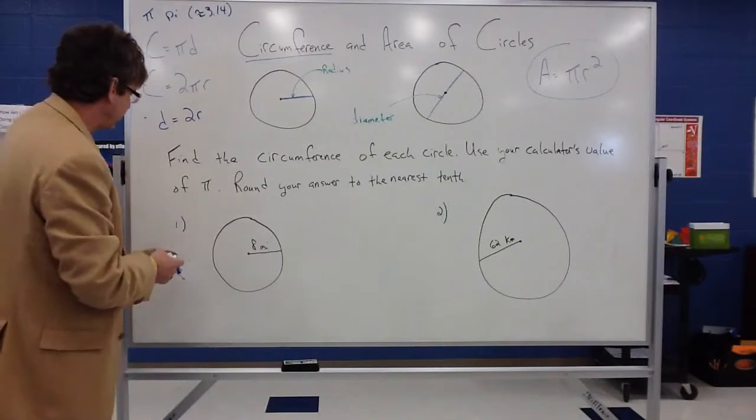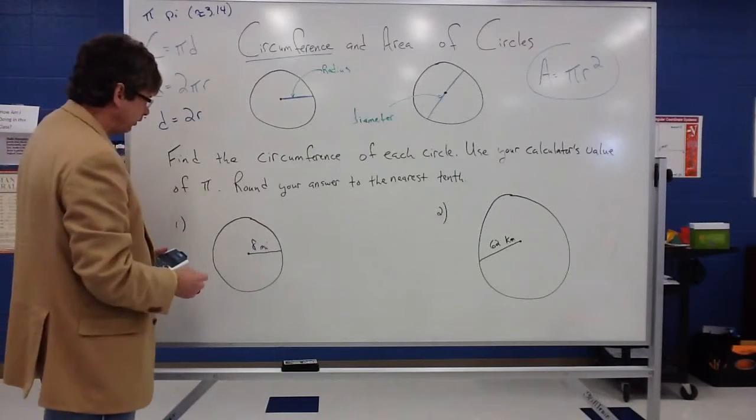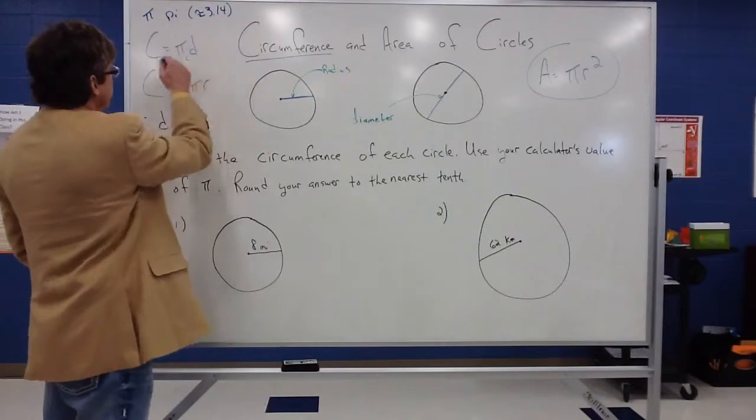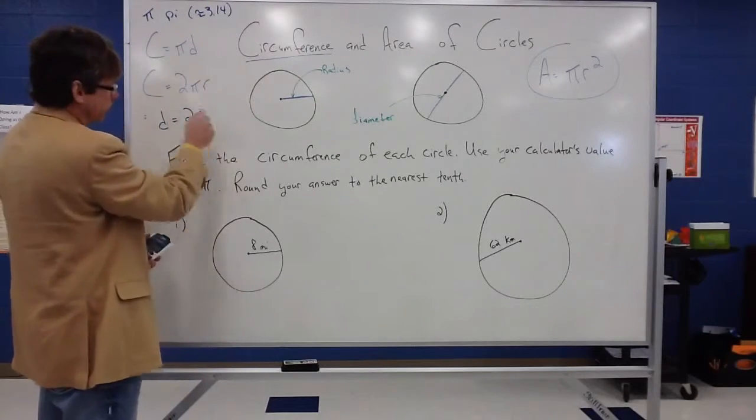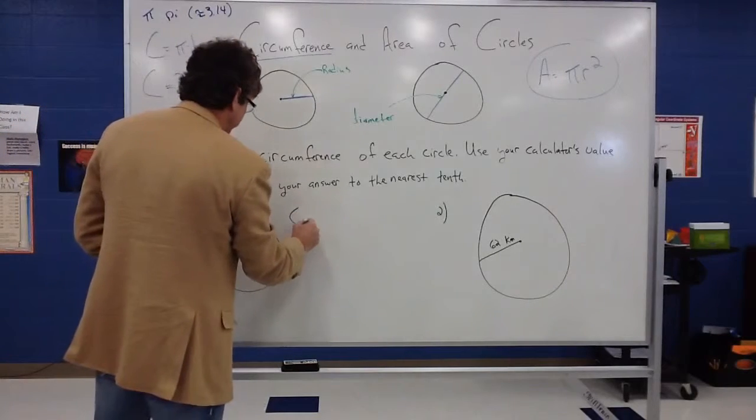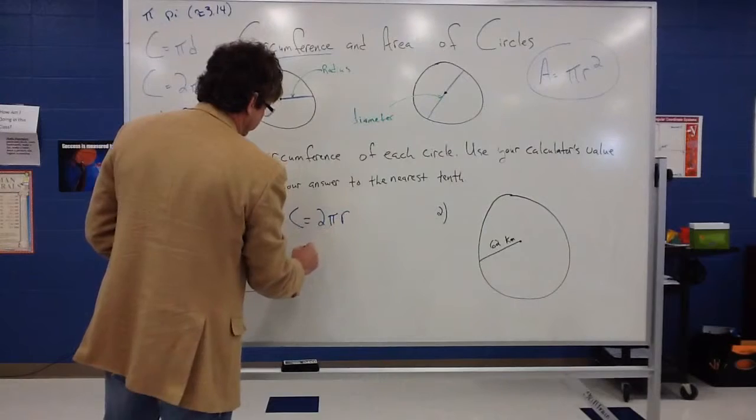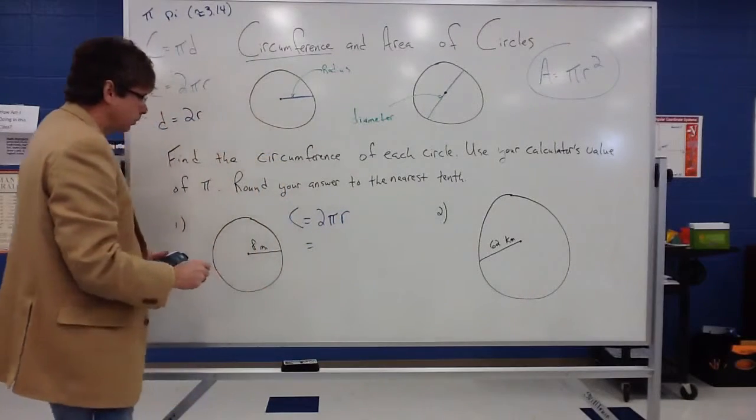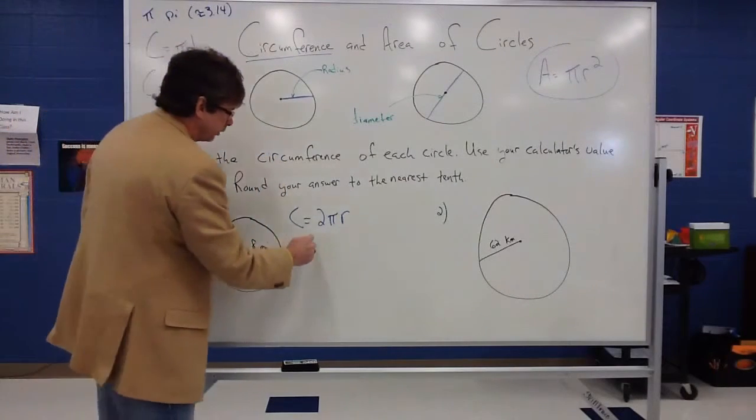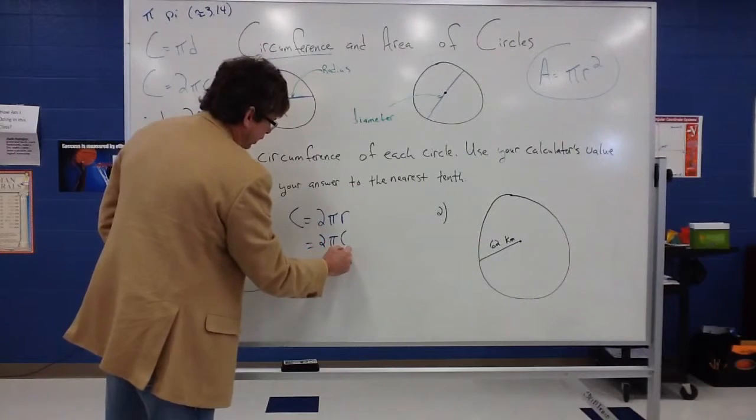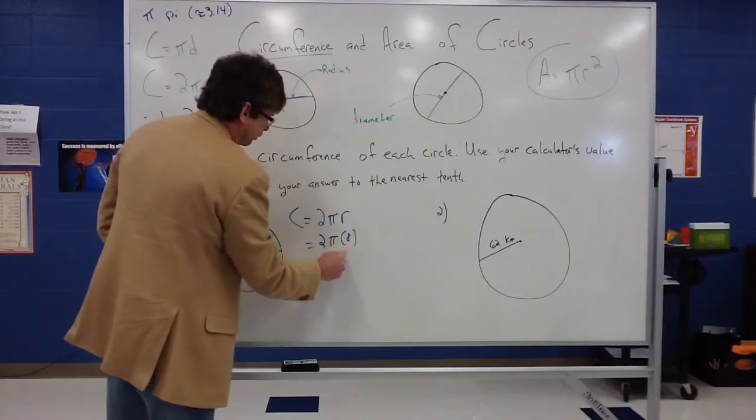So in this example, we have the radius is 8 miles. And again, I can use either formula, but since this one involves the radius, I can say the circumference is equal to 2 times pi times the radius. So again, when we substitute in, we just have to replace the pi's okay, but we're going to replace that radius with its actual value.